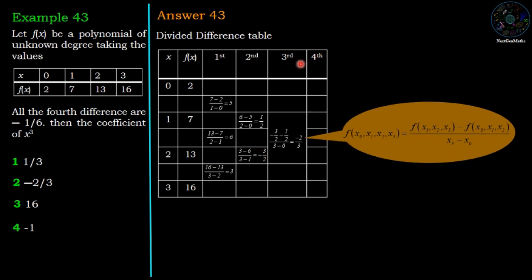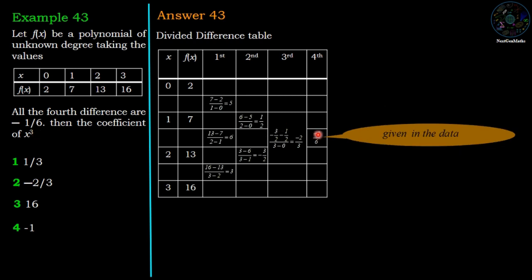Now third order divided difference equals the difference of second order: minus 3 by 2 minus 1 by 2 divided by 3 minus 0, which has value minus 2 by 3. And we have given that the fourth differences are minus 1 by 6, therefore it is minus 1 by 6.